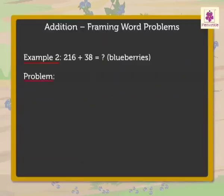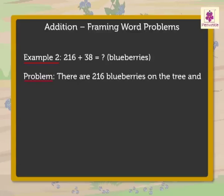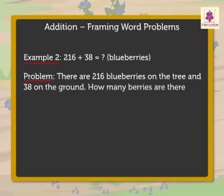The addition word problem for this example can be framed as: There are 216 blueberries on the tree and 38 on the ground. How many blueberries are there all together?